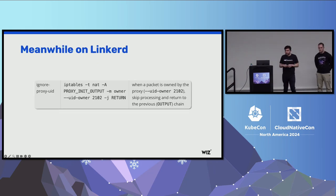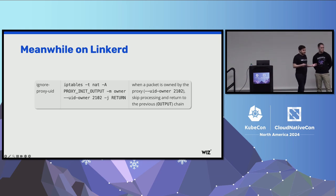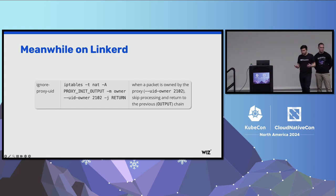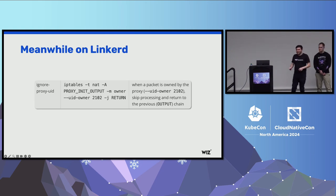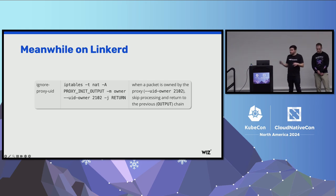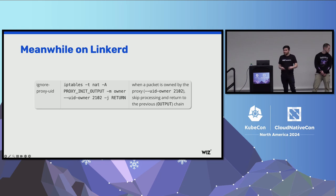In terms of parallels to Linkerd: the architecture is very similar between the two services, and Linkerd also works similarly. One of those IP tables rules in Linkerd is called ignore proxy UID — as the name implies, it ignores any traffic coming from the proxy UID, in this case 2102. That's the Linkerd equivalent to Istio's 1337, and if you're able to assume that user ID, you will be exempt from all IP tables rules and go directly into the network.